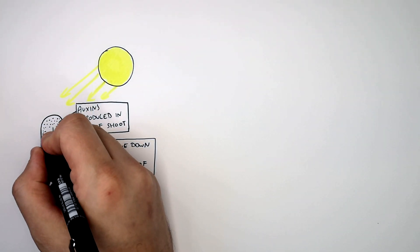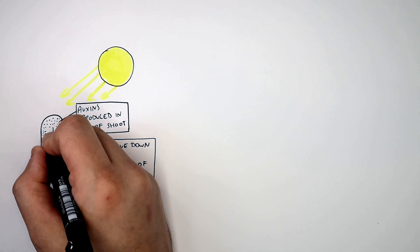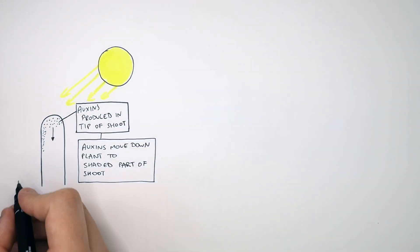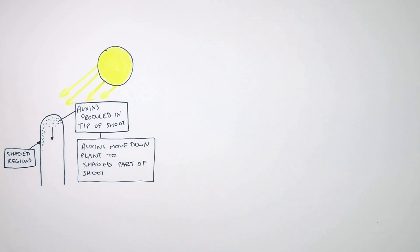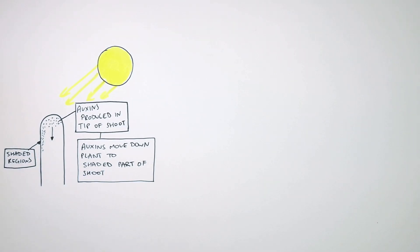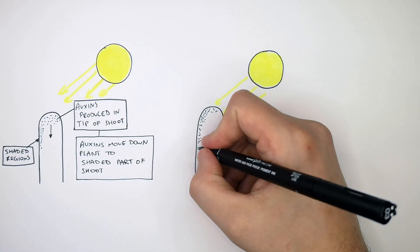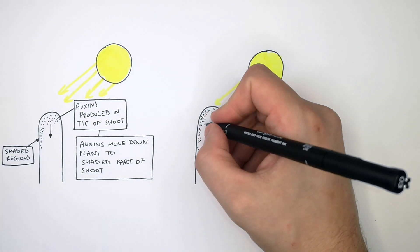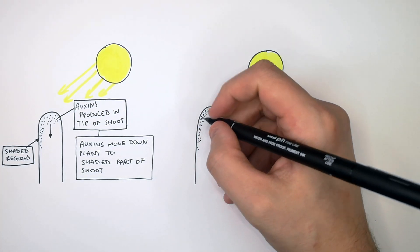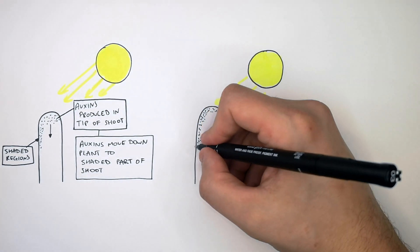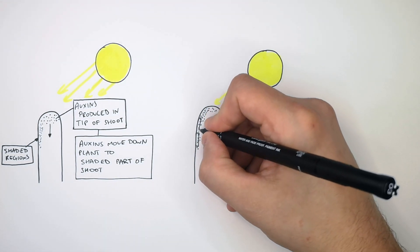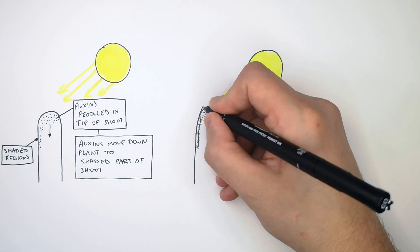The auxins are going to move down the plant, but they're going to move to the shaded region. The auxins have now accumulated in the shaded region of the shoot. The auxins are going to cause the cells in the shaded region to grow quicker — these cells are going to elongate more quickly.